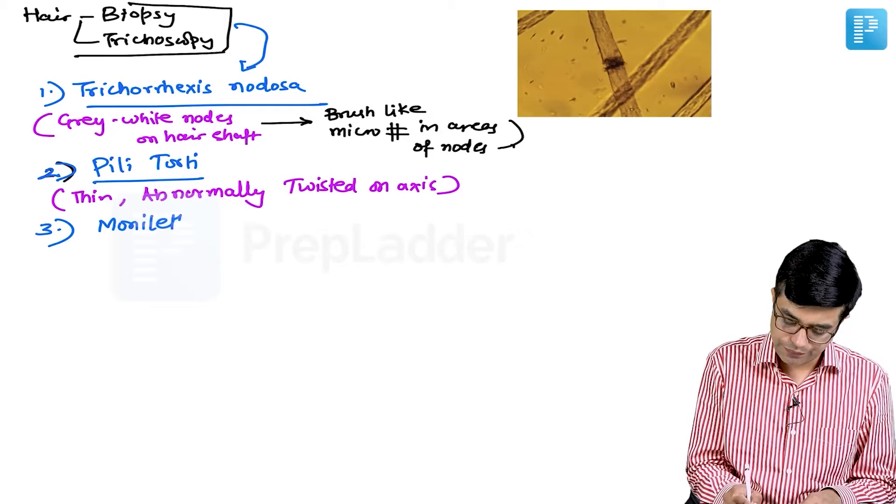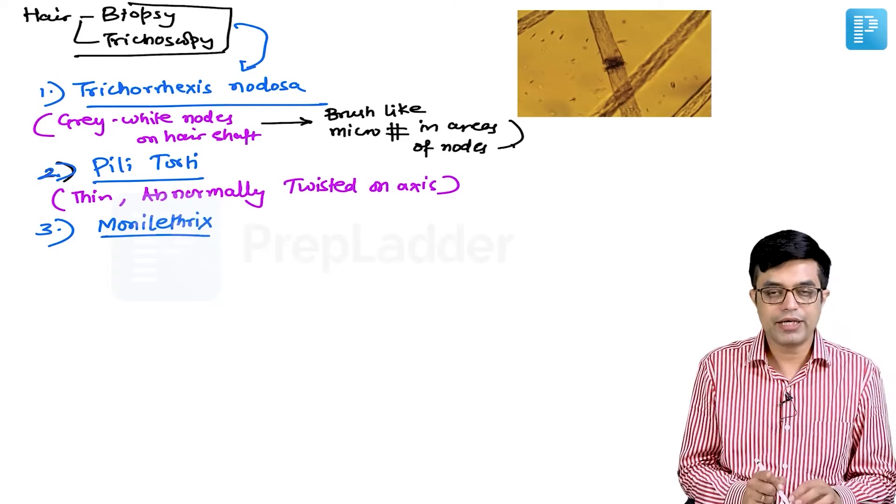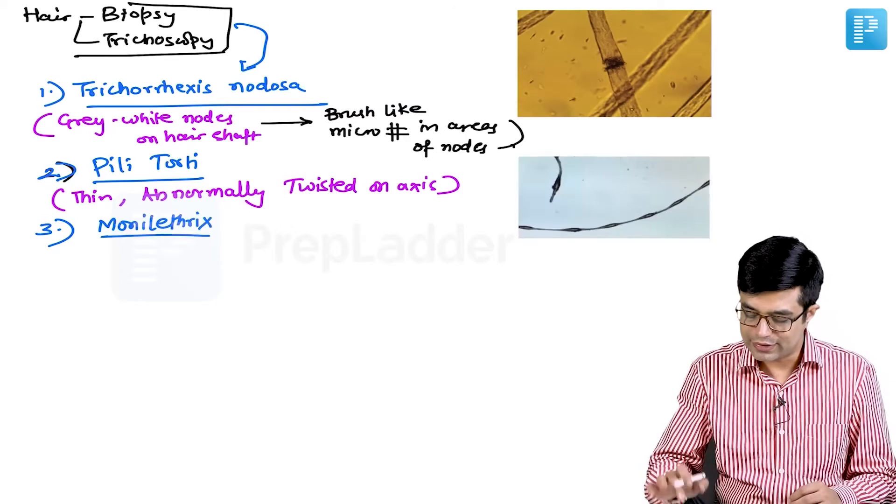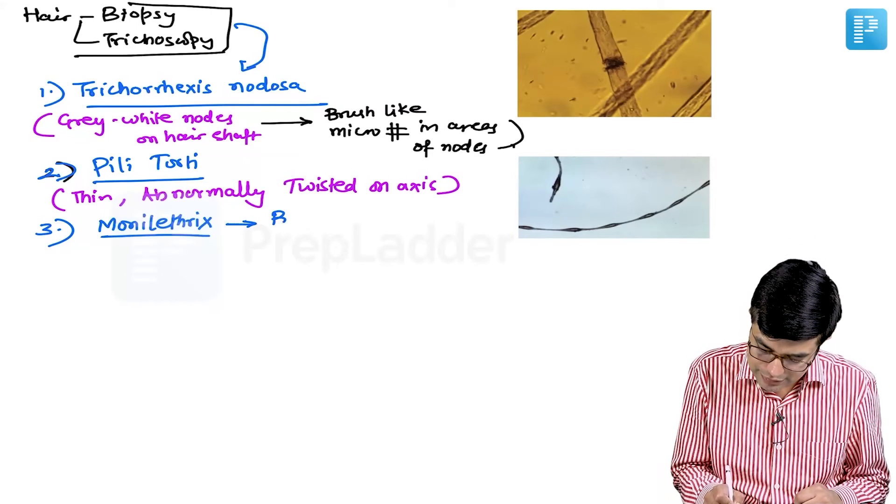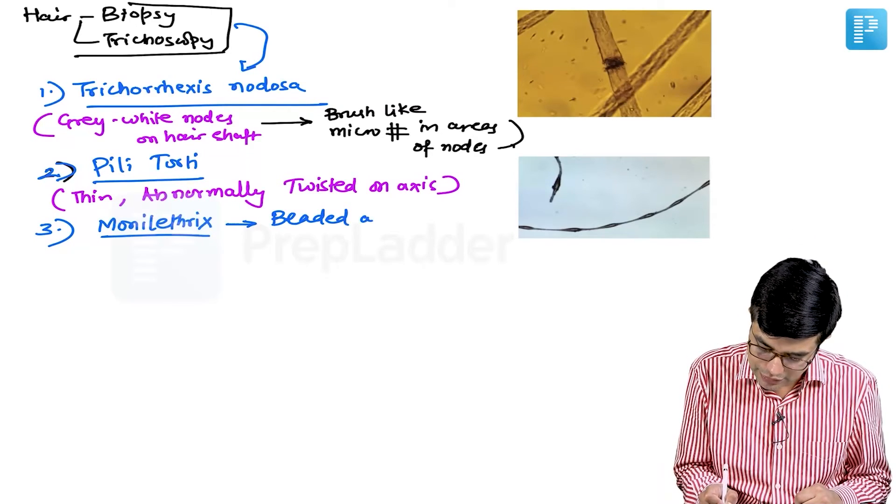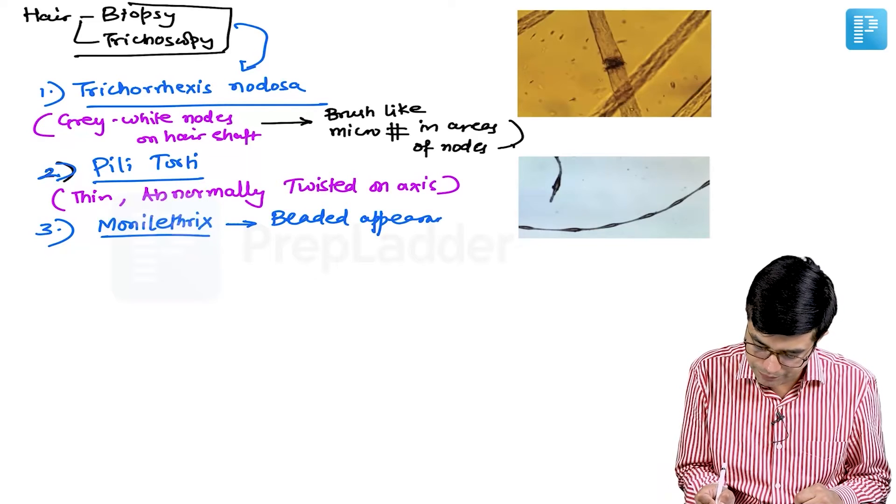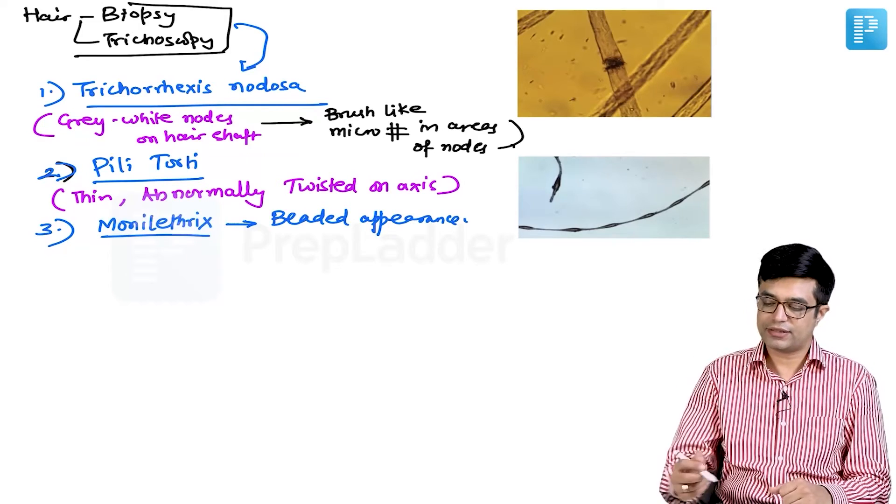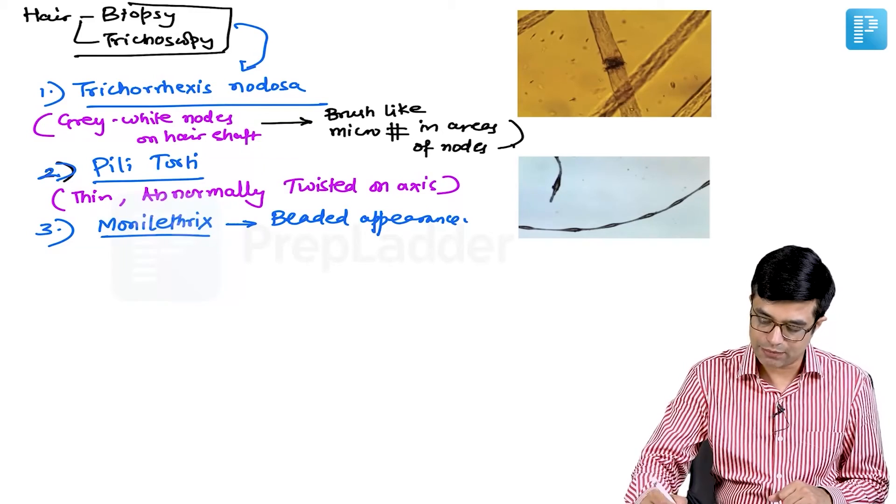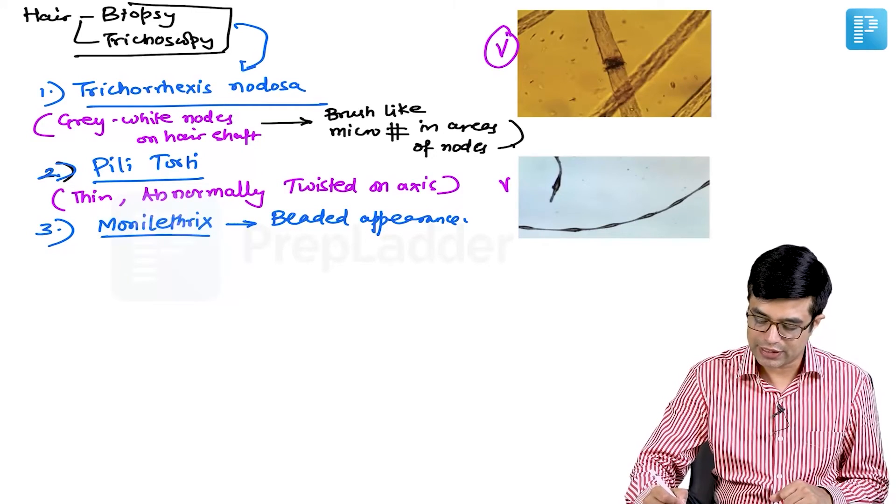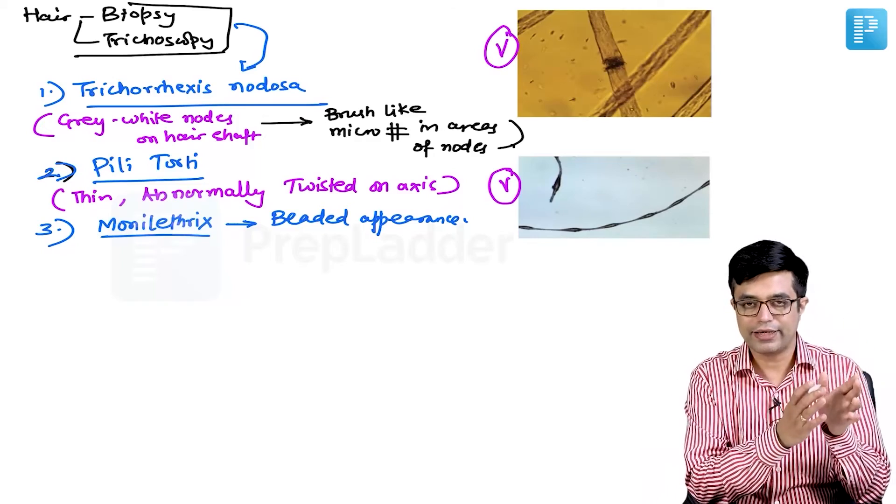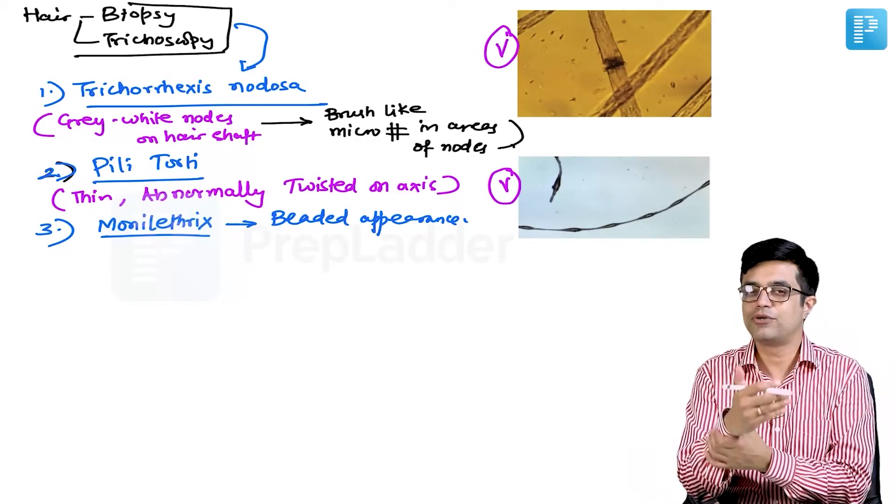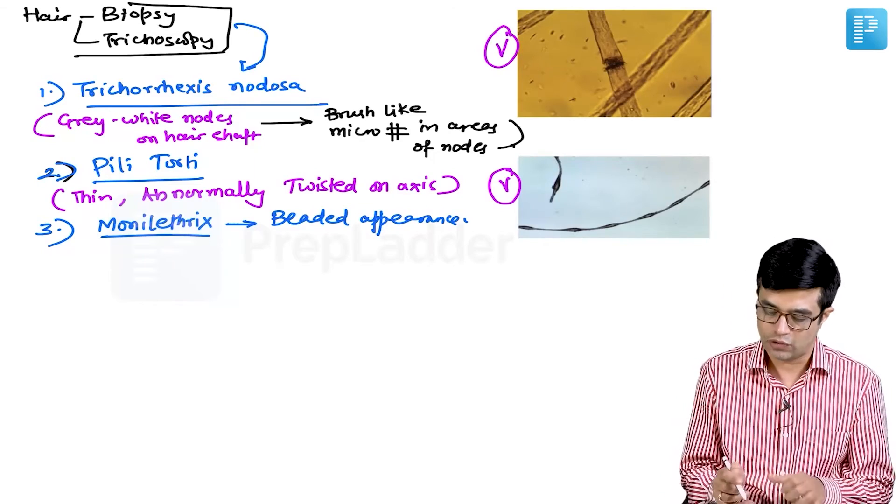The third pattern is monilithrix. What will you find in monilithrix pattern? Beaded appearance of the hair on microscopy is called monilithrix. This can be asked as a potential visual along with the clinical image which I showed, and they can ask you it is related to which syndrome. The answer will be Menkes Kinky Hair Syndrome.